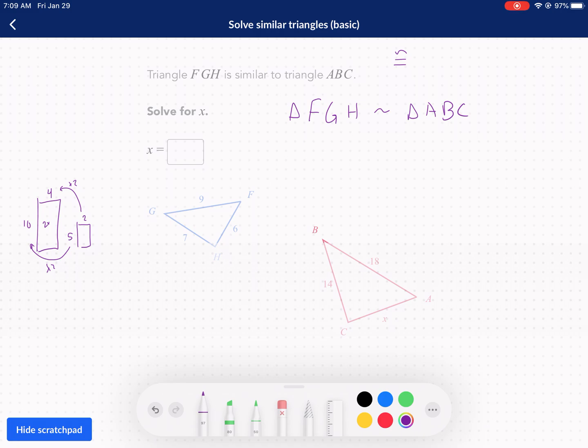The trick to these problems is understanding which sides are equivalent. Which sides do we compare? So do we compare 9 with 14 or do we compare 7 with 18? Do we compare 6 with this x? That's the trick to this problem and I'm going to show you how we determine which sides it's comparing. Well the key to this problem lies in the labeling of the triangle.